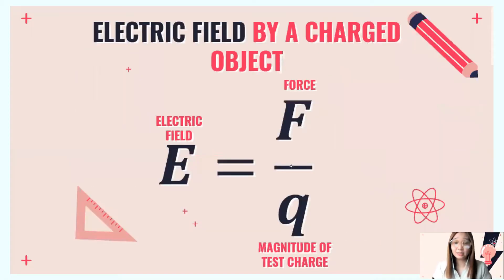Electric field can be mathematically defined as E equals force over the magnitude of the charge, or the test charge. This means electric field is the force per unit charge. It is measured in newtons per coulomb.